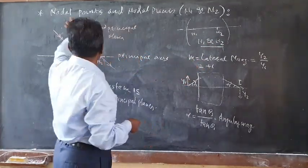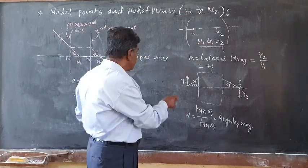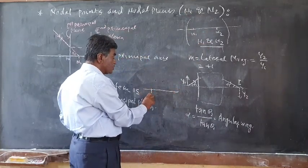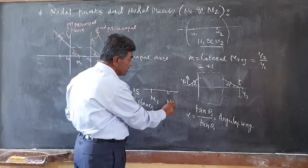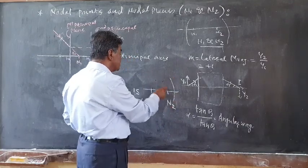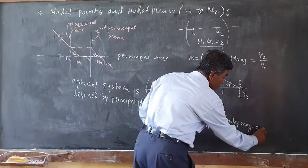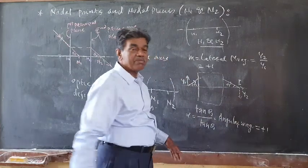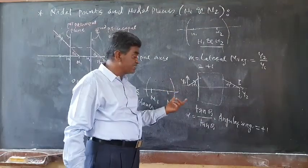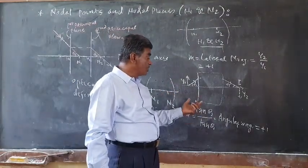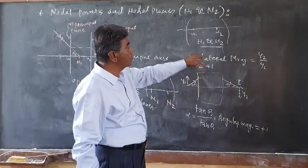In the case of the nodal points, N1 and N2 are the points on the axis such that the lens system has a unique positive angular magnification. These are pairs of points on the axis such that the lens system has unit positive angular magnification in case of N1 and N2, and unit positive lateral magnification in case of H1 and H2.